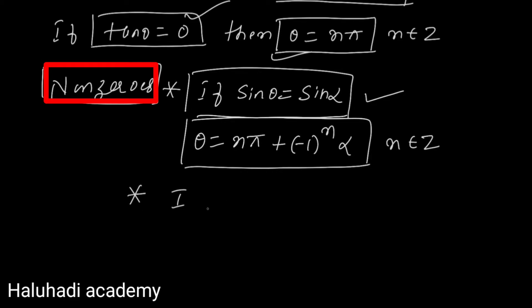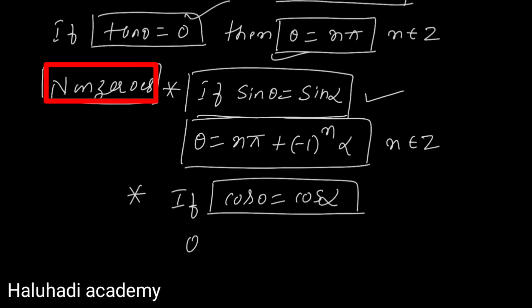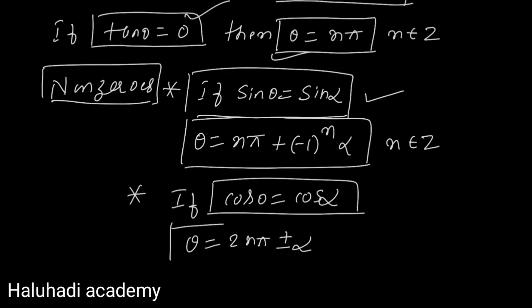The second formula: if cos θ equals cos α, then θ equals 2nπ plus or minus α, where n belongs to Z.